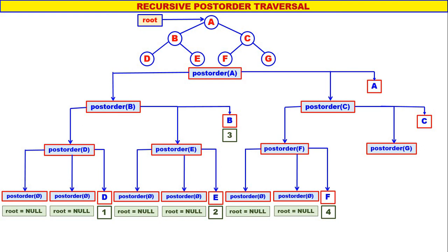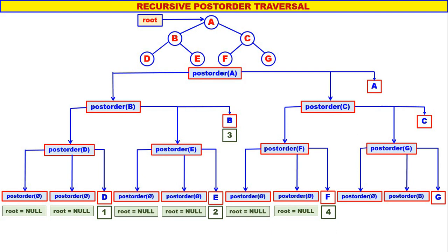After that we go to post_order(G). There is no left child for G, therefore post_order(null). There is no right child for G, therefore post_order(null), and display G. When root is null nothing will happen. G is the fifth to be displayed. Post_order(G) is over. After that we display C — C is the sixth to be displayed. Post_order(C) is also over. Next, A will be the seventh to be displayed.